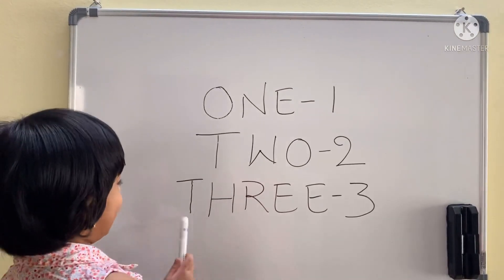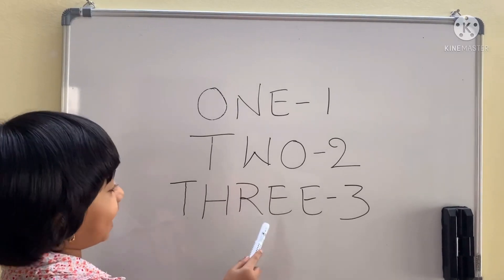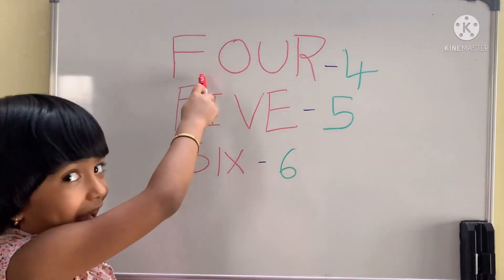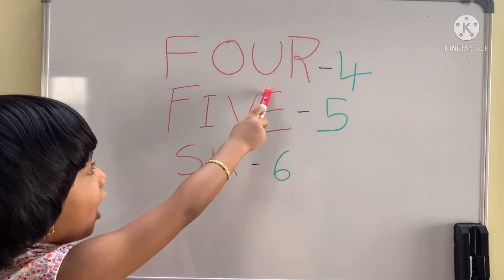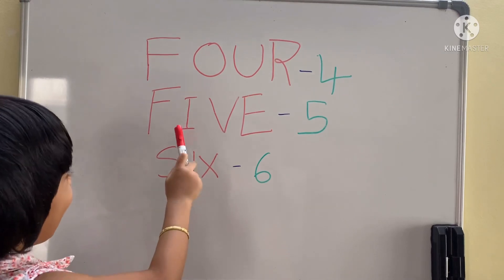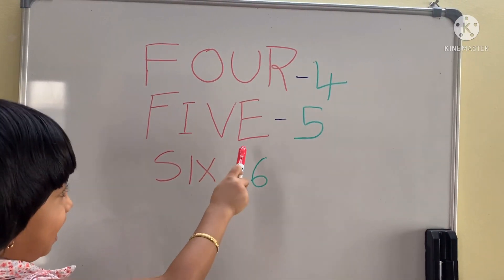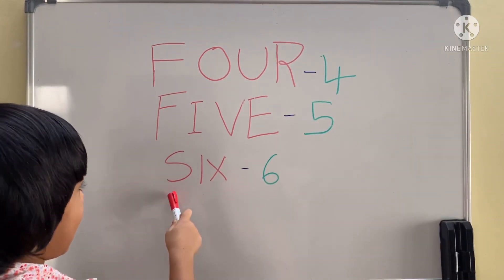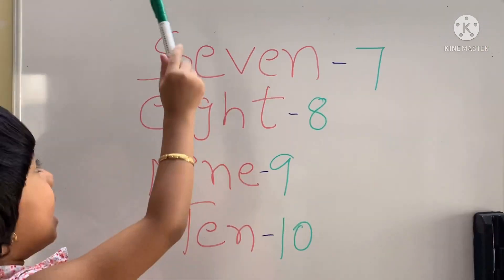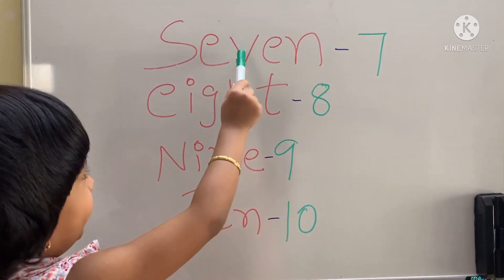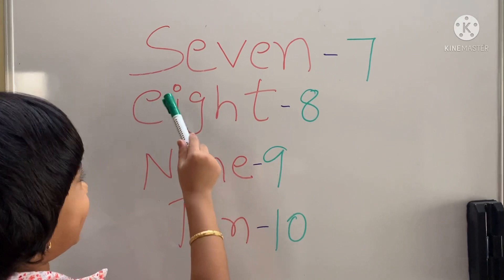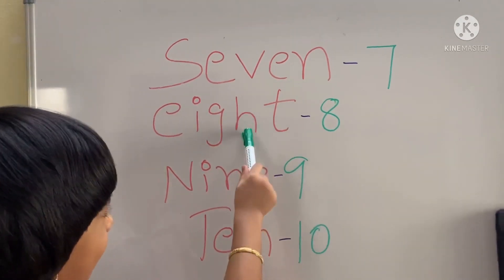Children, repeat after me: T, W, O, N, E — Three. S, I, X — Six. S, E, V, E, N — Seven. E, I, G, H, T — Eight.